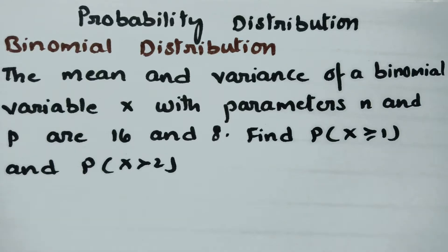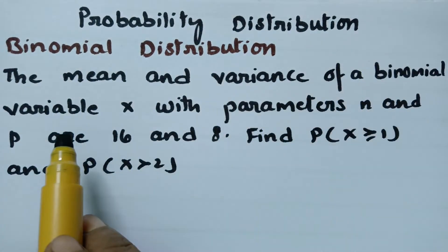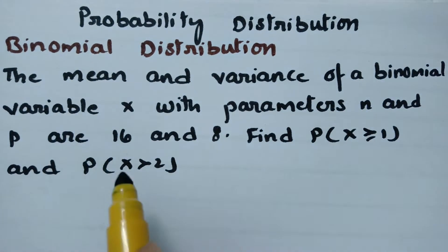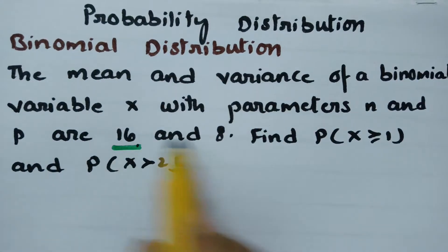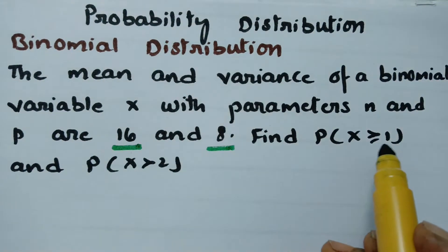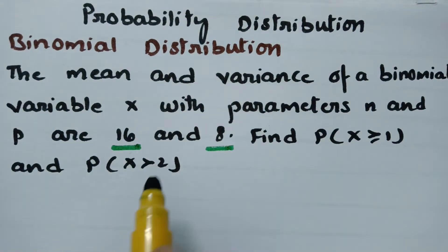Today's video is on binomial distribution, related to probability distribution. The mean and variance of a binomial variable x with parameters n and p are given as 16 and 8. We have to find out the probability for x greater than or equal to 1, and the probability of x greater than 2.